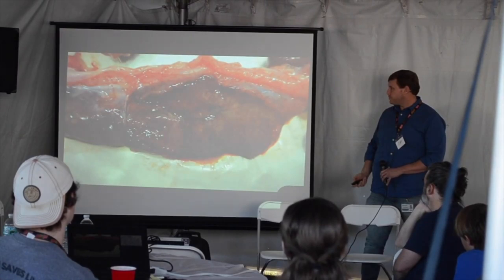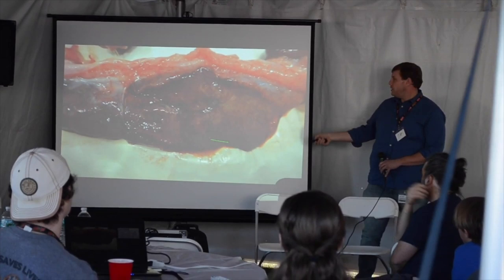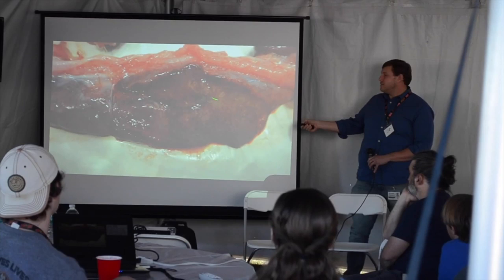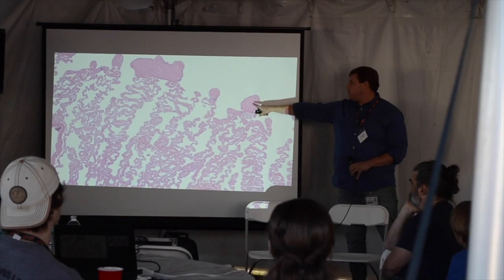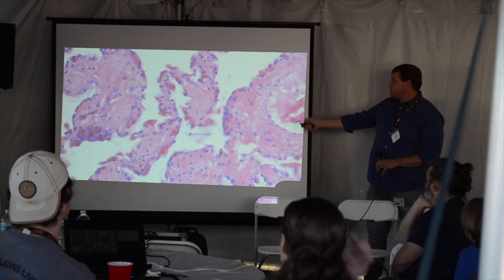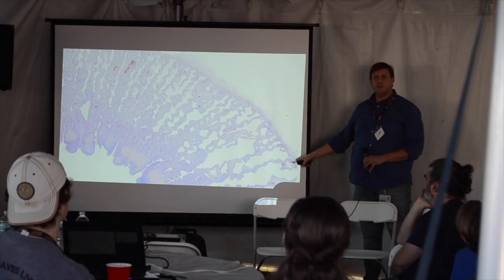This is the lung of a green tree python with nidovirus infection — you can see it's very reddened, very wet looking, a little cloudy because there's inflammatory cells in there. This is what normal snake lung should look like — you see pink and white and very little blue. This is a nidovirus lung — see how blue it looks? That's all inflammation and epithelial proliferation, all decreasing the function of the lung. Blue is bad — it's proliferation and inflammation.